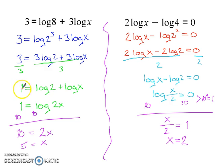Then you're left with on the left hand side 1 equals log 2 plus log x and on the right log x minus log 2 equals 0. From there you should be able to solve.